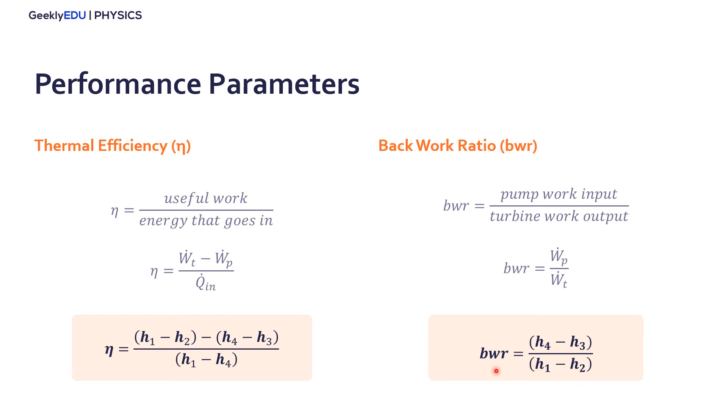And this generally in a cycle is around 1%, so it means from the work we produce in the turbine, 1% needs to go back in to elevate the pressure at the pump.